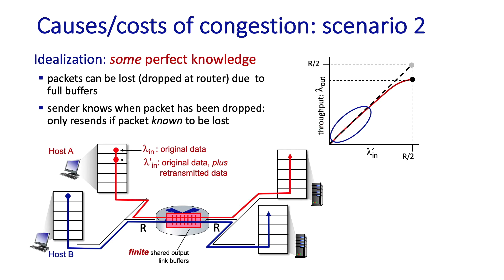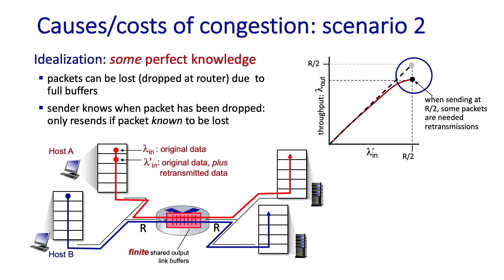More interesting is the high arrival rate region. Here, arriving packets increasingly include retransmitted packets, so the receiver throughput no longer increases 1-for-1 with the overall arrival rate. As the overall arrival rate approaches R/2, the maximum throughput at the receiver is actually less than R/2. This gap exists because n retransmitted copies of a packet take up to n times the transmission capacity of a single packet, but these n transmissions contribute only a single packet to the throughput.